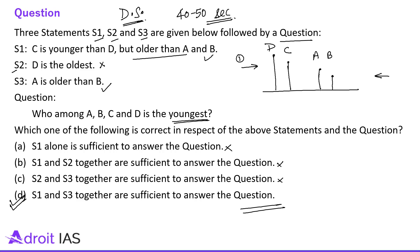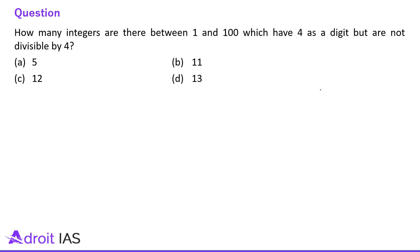Let's talk about another question. This question belongs to number system: how many integers are there between 1 and 100 which have 4 as a digit but are not divisible by 4? It's a very simple question.